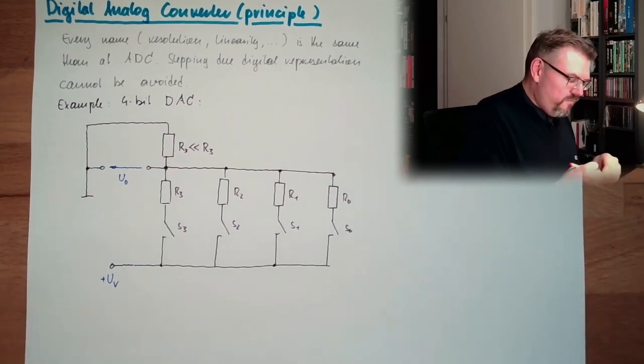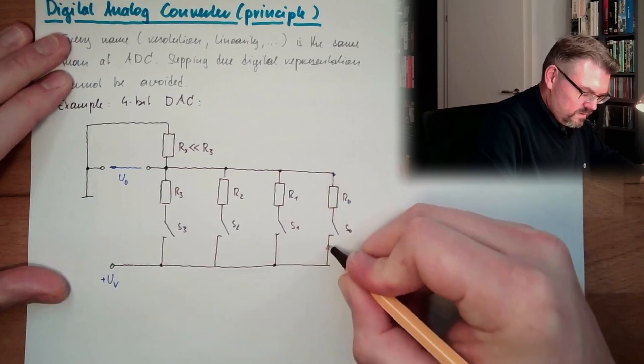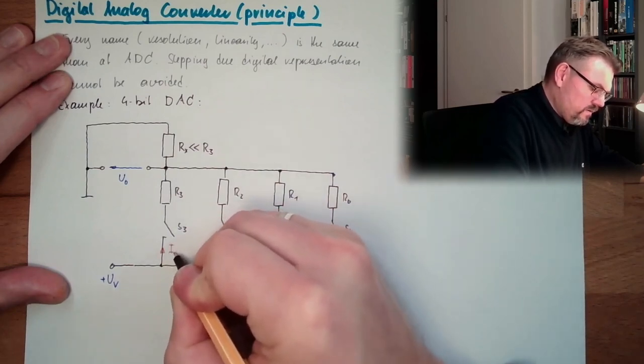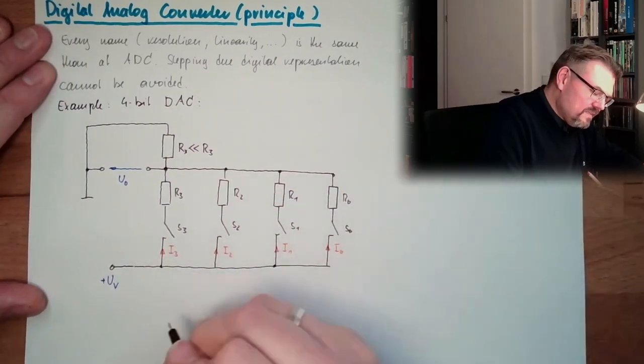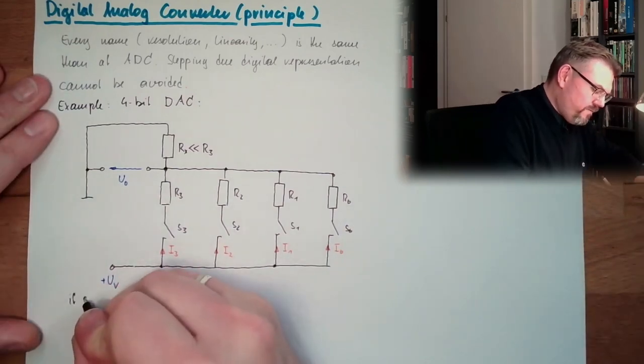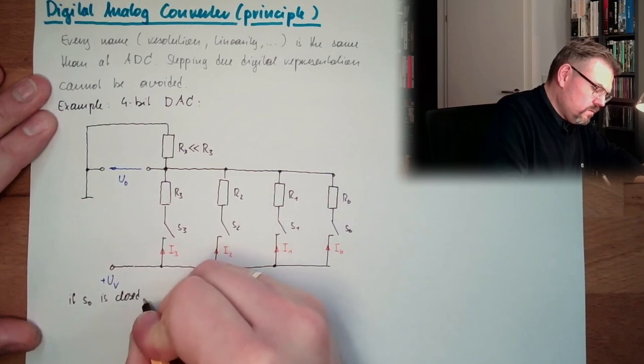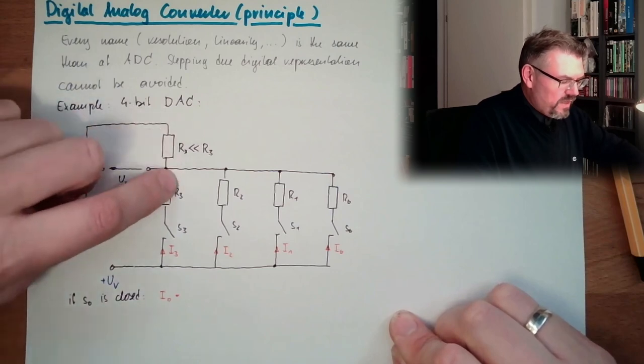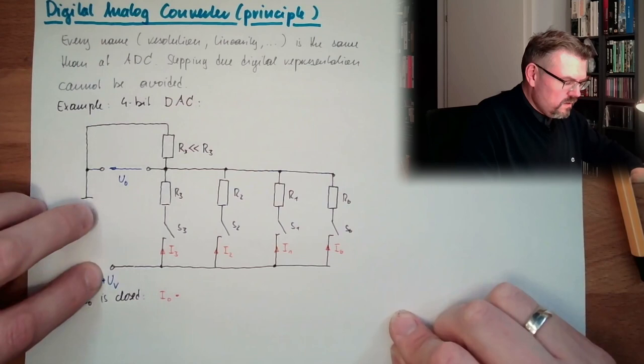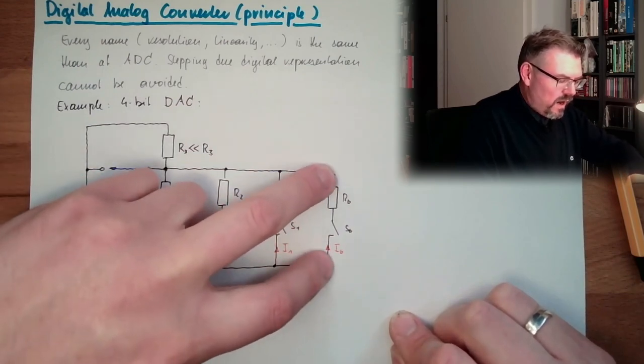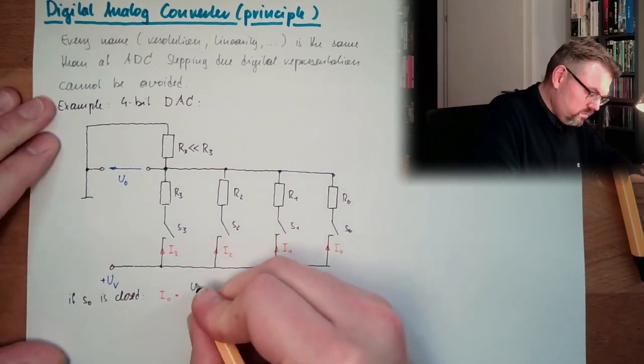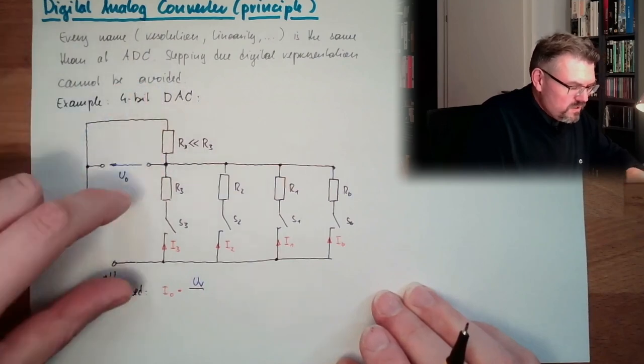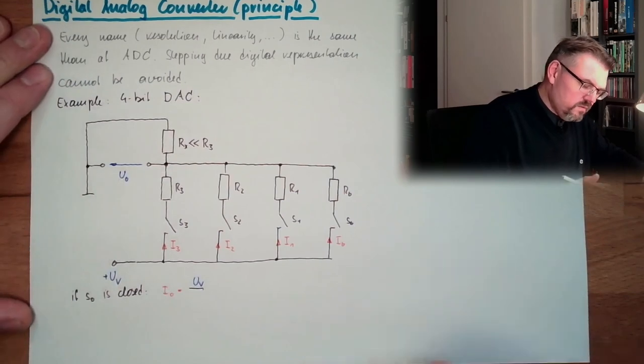And now let's think about, this is I0, this is I1, this is I2, this is I3. In case, if S0 is closed, I0 equals UV, I am not taking this Uo now into account, UV divided by R0. Because this is much smaller, so there is not that much voltage drop. So I can say, okay, this is almost zero compared to UV divided by R0.